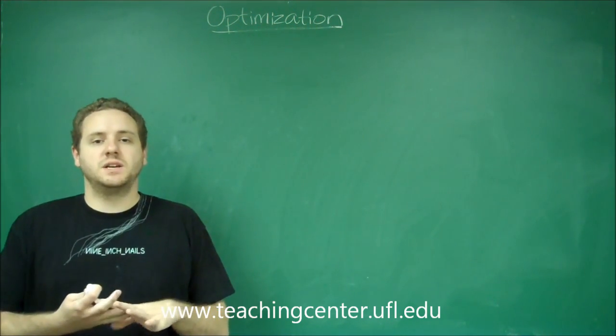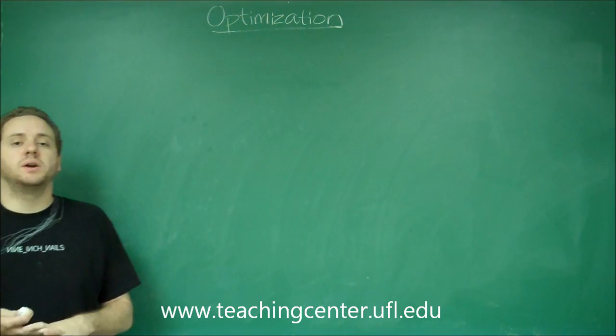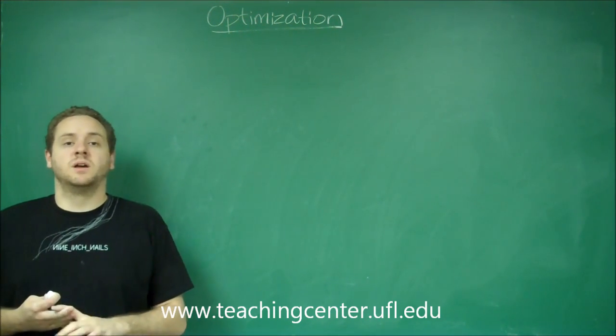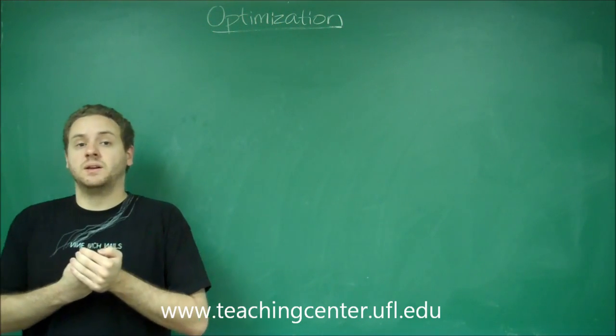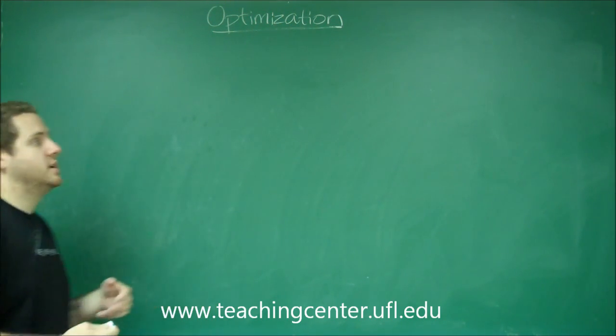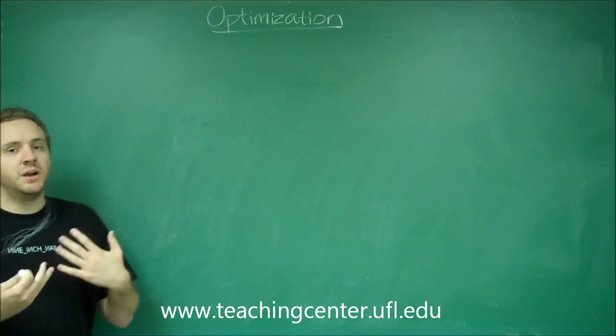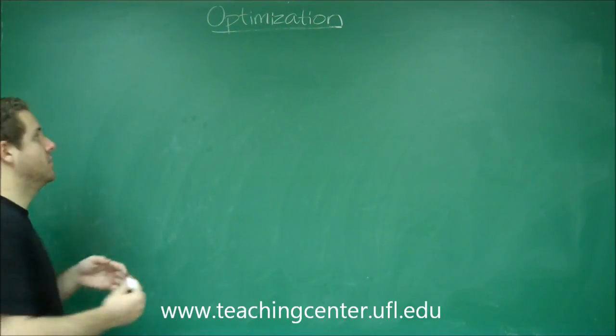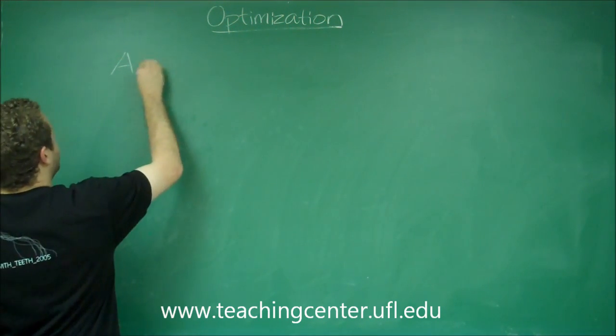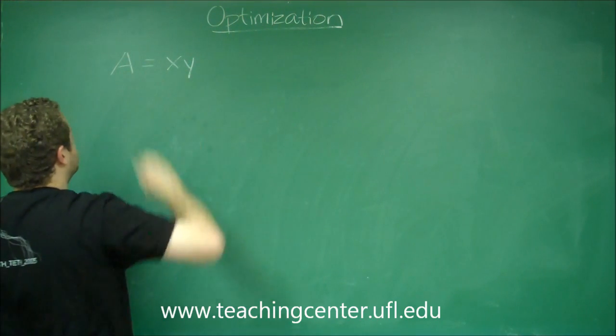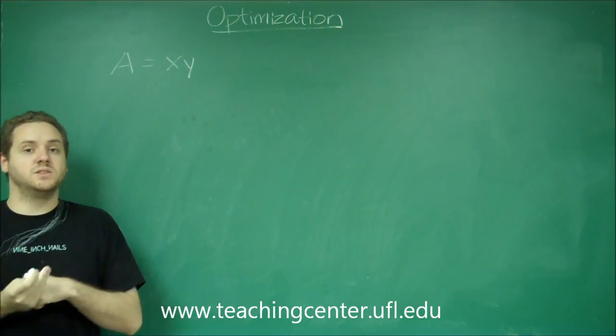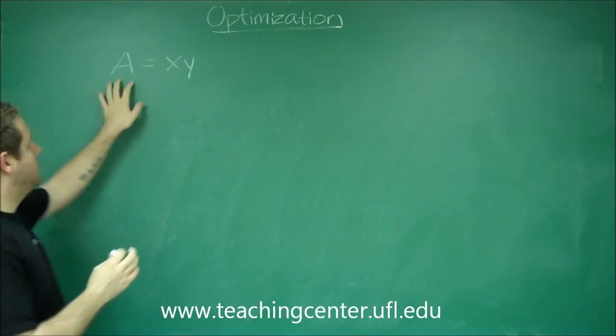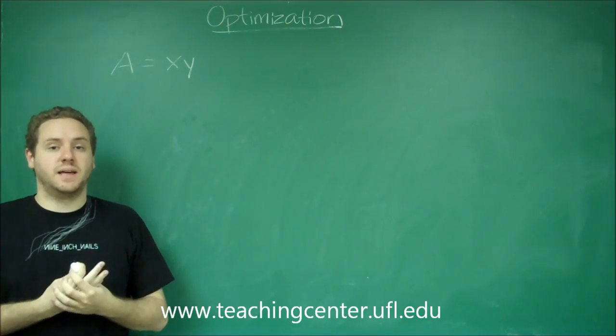In an optimization problem, there's always something you're trying to minimize or maximize. What you always want to do is come up with an equation for that thing. For example, if I was trying to maximize the area of a rectangle, I could write A = xy, where x and y are the dimensions of the rectangle. That would be an equation for my area, and I would want to maximize that.